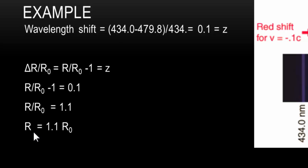Well, in other words, R, which is the scale factor today, is equal to 1.1 times the scale factor back then, when this source emitted its radiation.